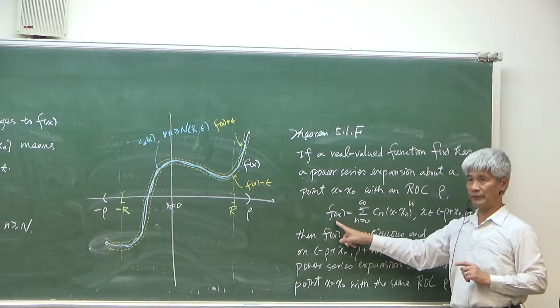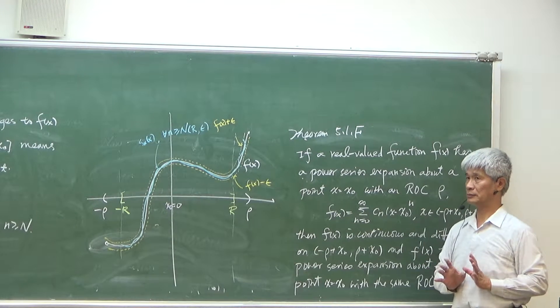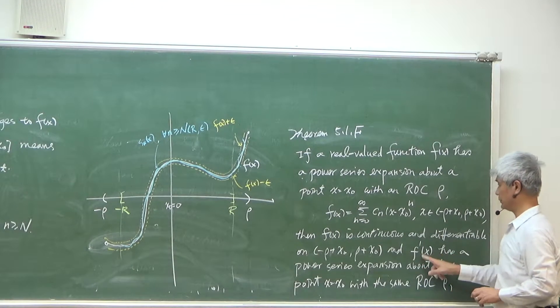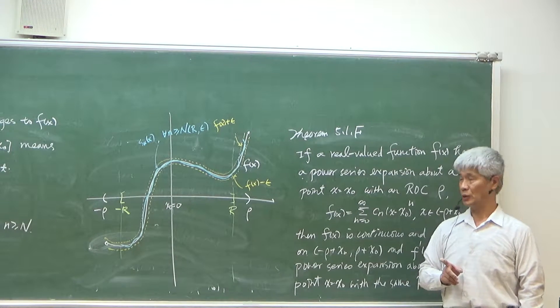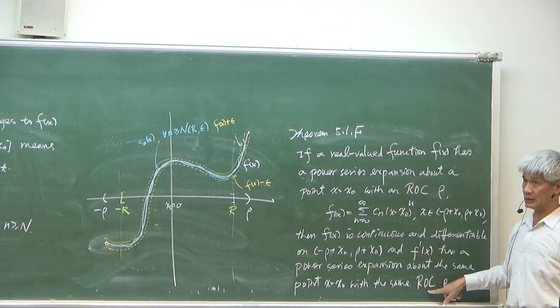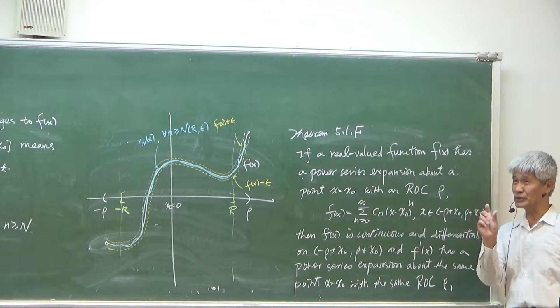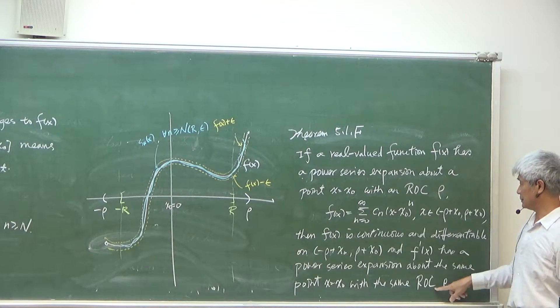then the derivative of f of x exists and this derivative can be expanded by a power series with the same center and the same ROC, so the radius of convergence is the same.